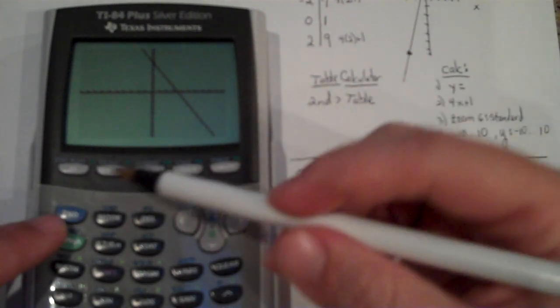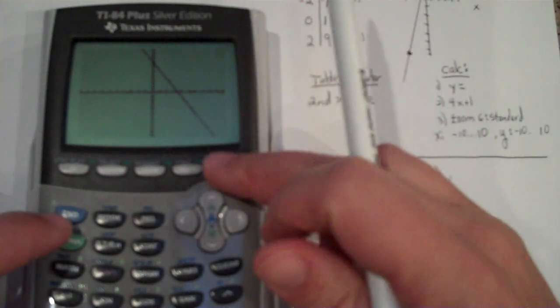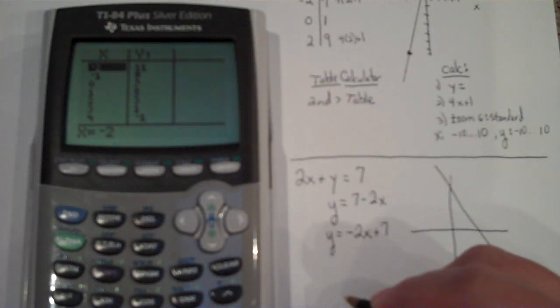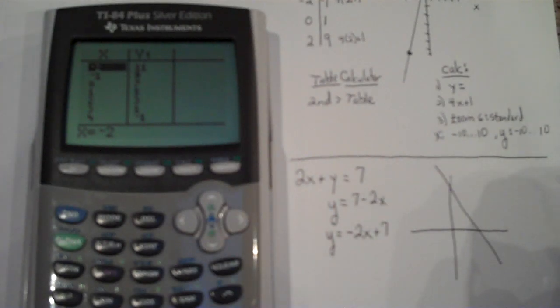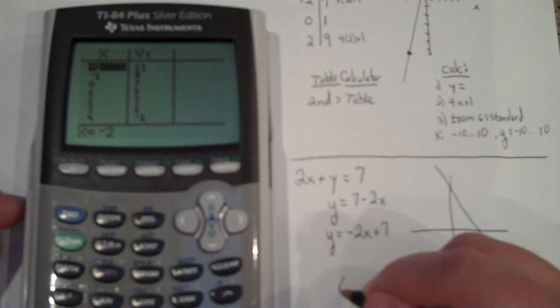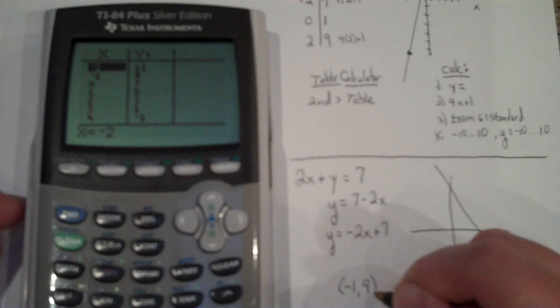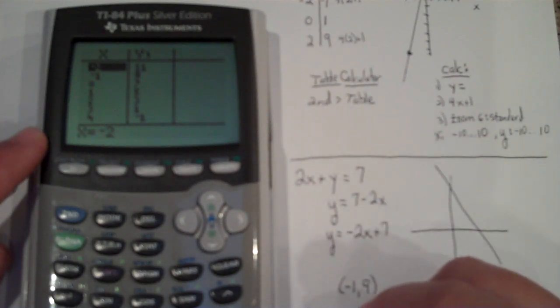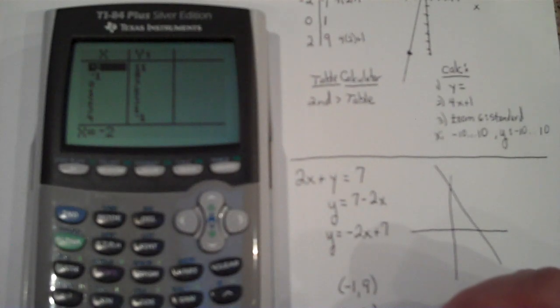And then I'm going to go to the table, which is second table, and I'm going to generate a series of ordered pairs. Now, usually on the computer, the options that you have on the X and Y are between negative 10 and 10. Not always, but usually. So I'm going to look at my table of values here, and I'm going to select negative 1, 9. That's an ordered pair that satisfies the equation. 0, 7, and 1, 5. So if I were having to put this into the computer, I would probably select 0, 7, and 1, 5.